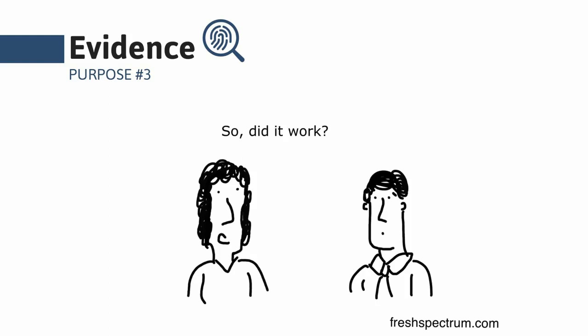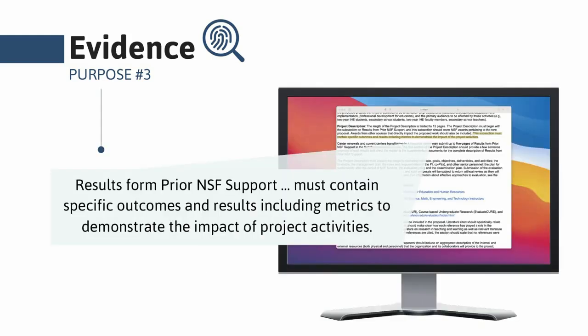The third purpose of evaluation is to generate evidence. So we hear a lot about evidence-based practices or high impact practices. And we trust that systematic research and evaluation of these efforts provided evidence that they work. So just as you borrow from other successful interventions, one day someone else might borrow from yours. Your evaluation provides evidence of what works and what doesn't, both equally important learning opportunities. For those applying to the National Science Foundation, if you've been previously funded by them, you'll have to begin your proposal with a section called Results from Prior NSF Support. This subsection has to include evidence of specific outcomes and results, including metrics to demonstrate the impact of your project activities. These come from your evaluation. So it's important to consider at the start of your project what kind of evidence you might want to have at the end of your project.